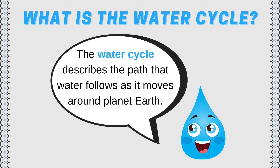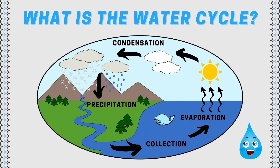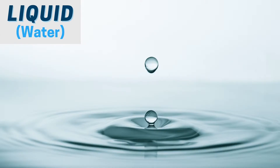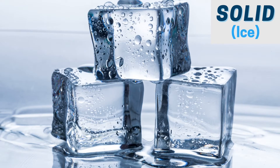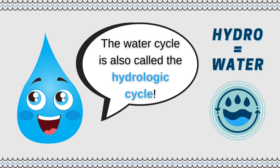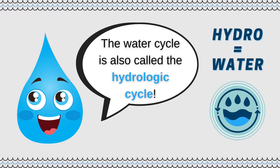The water cycle describes the path that water follows as it moves around our planet. Earth's water is constantly moving between rivers, lakes, and oceans, the atmosphere, and the land. And as water moves through this cycle, it also changes its form between a liquid, a gas, and a solid. The water cycle can also be called the hydrologic cycle because hydro means water in Greek.